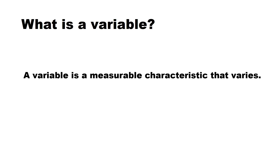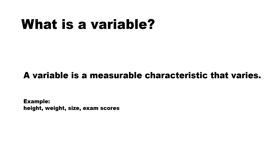So what is a variable, by the way? Kapag sinabing variable, this is a measurable characteristic that varies. Measurable, meaning nasusukat siya — it comes with numbers — and it's a characteristic that varies. Examples of those characteristics are height, weight, size, exam scores. When we say it varies, it means nagkakaiba-iba siya. Your height is different from your classmate's height, your weight could be different from other people's. So that's why it's called a variable.